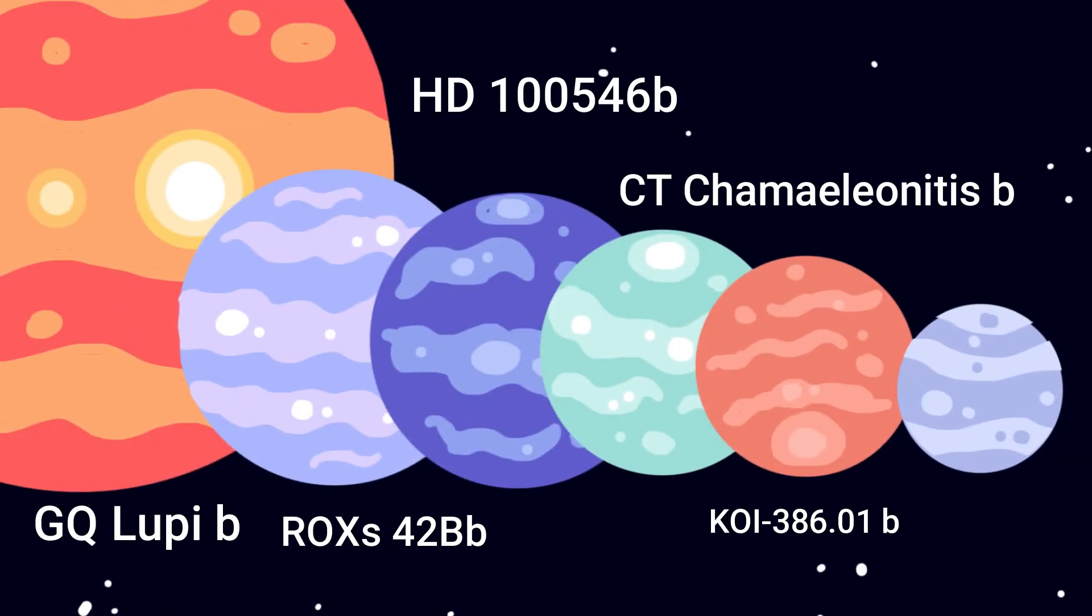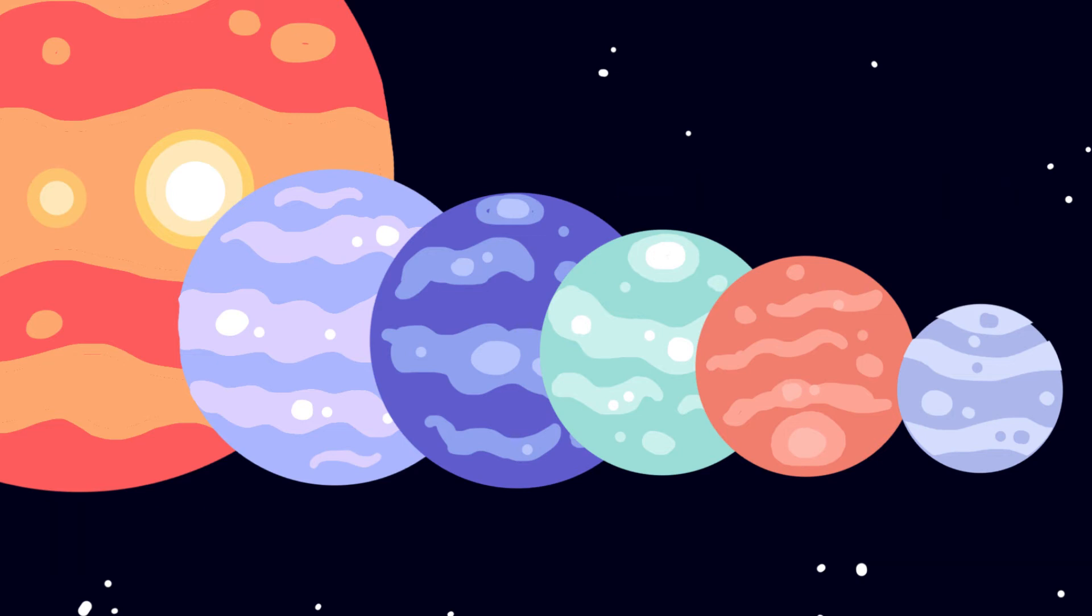This puts it nowhere near the 5 biggest exoplanets ever discovered. DENIS-P is classified as either a sub-brown dwarf or an actual brown dwarf.